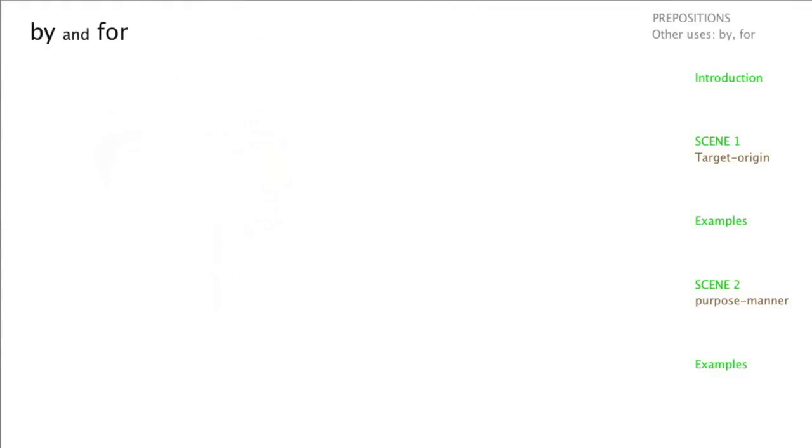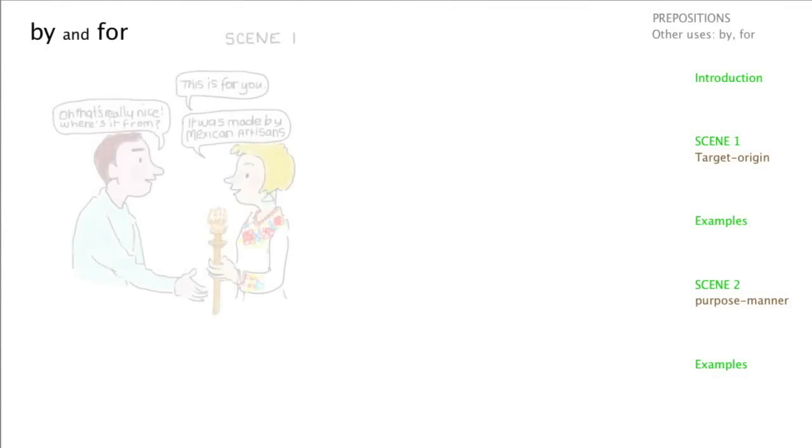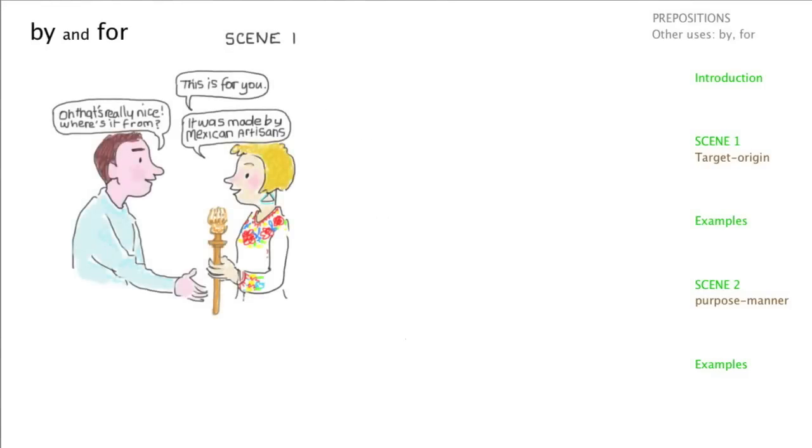We're looking at by and for, and here's a picture to help us along, a little conversation. She's saying this is for you, and he says oh that's really nice, where's it from? And she says it was made by Mexican artisans. So we've got four up there at the top, I'll put a little circle around the four, and we've got a by, and there's a bit of a difference between them.